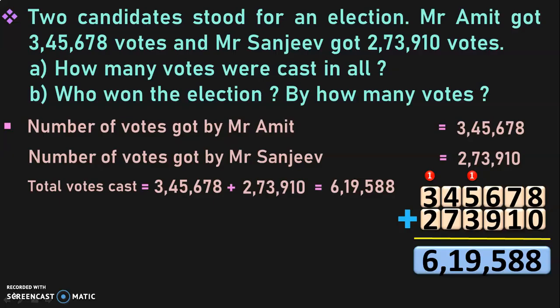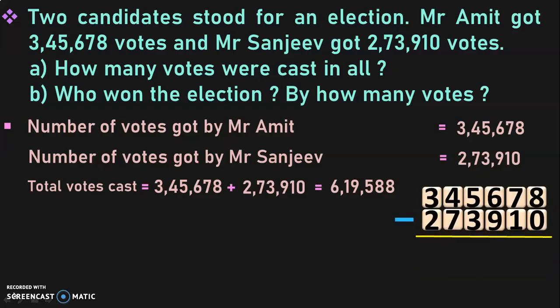Who won the election and by how many votes? Comparing the two six-digit numbers, we look at the leftmost digit — 3 versus 2. Since 3 is greater than 2, Mr. Amit won the election. To find the margin, subtract Sanjeev's votes from Amit's: 3,45,678 minus 2,73,910. Begin from the one's place: 8 minus 0 is 8. 7 minus 1 is 6. 6 minus 9 cannot be done — borrow, 5,000 becomes 4,000 and 6 becomes 16. 16 minus 9 is 7. 4 minus 3 is 1. 4 minus 7 cannot be done — borrow from 3 making it 2, so 14 minus 7 is 7. 2 minus 2 is 0.